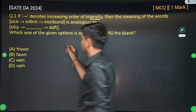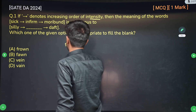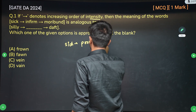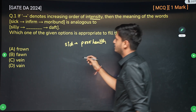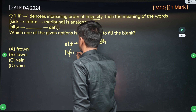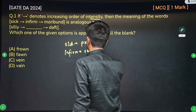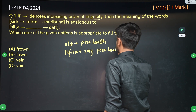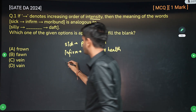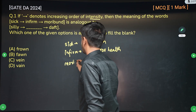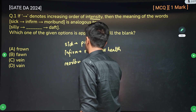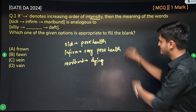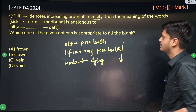The word sick means poor health, infirm means very poor health, and moribund means someone who is in a dying condition — very extreme poor health. So this represents an increasing intensity of sickness.